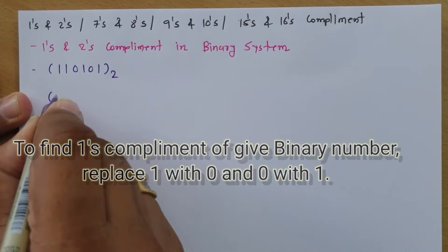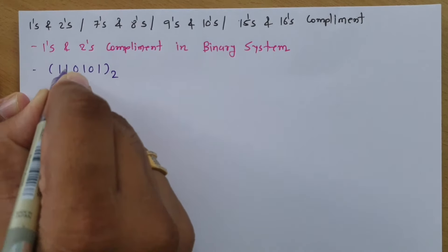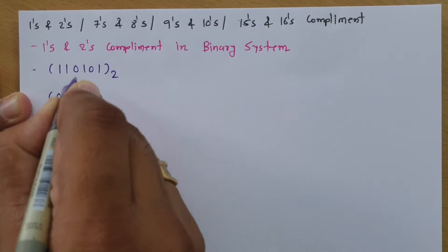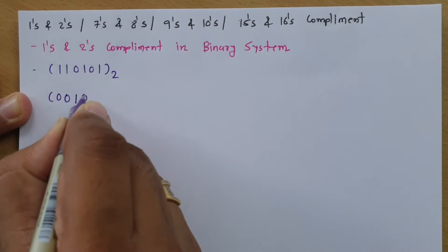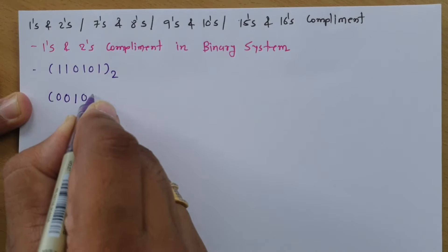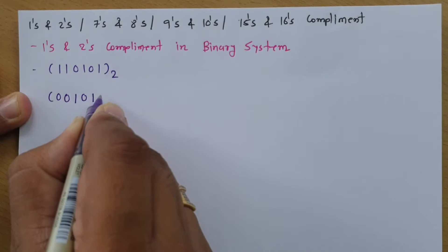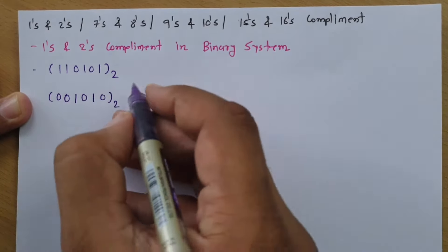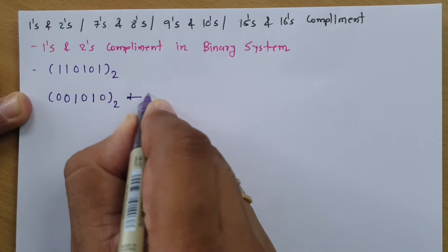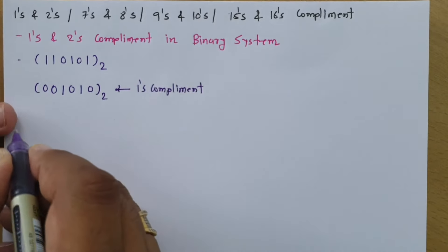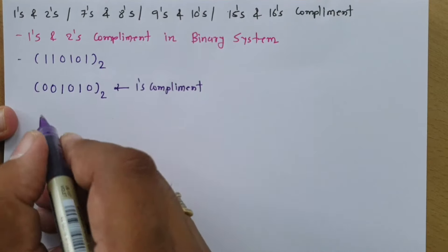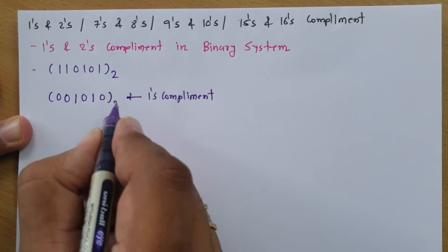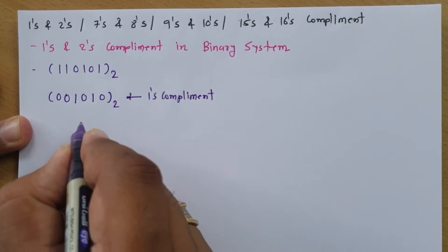Working through the example: this one gets replaced by zero, this one gets replaced by zero, this zero gets replaced by one, this one gets replaced by zero, this zero gets replaced by one, and this one gets replaced by zero. So this is the 1's complement. To get 2's complement, we simply add 1 to the 1's complement.